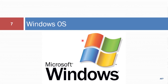IBM began producing PCs in 1981 and there was a need for an operating system at that time. IBM approached Microsoft, and Microsoft offered MS-DOS 1. DOS stands for Disk Operating System. Many versions of MS-DOS were launched, with the latest being MS-DOS 8 in the year 2000.